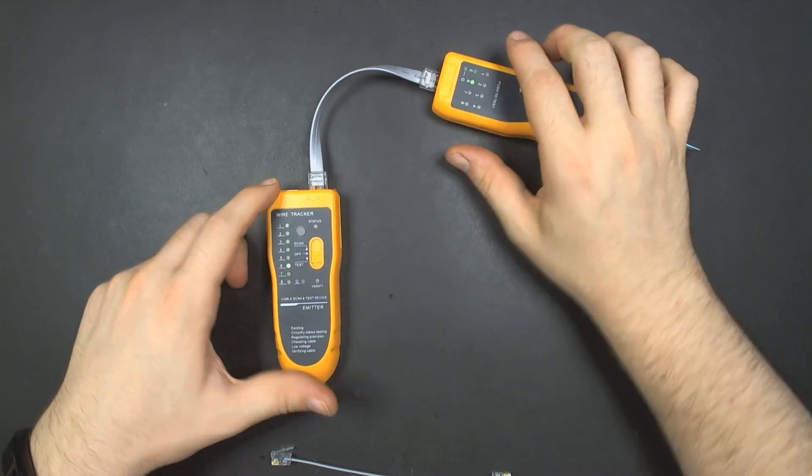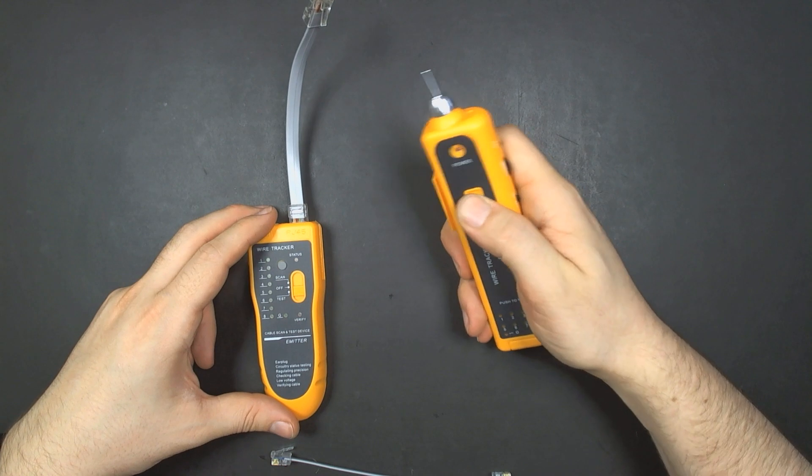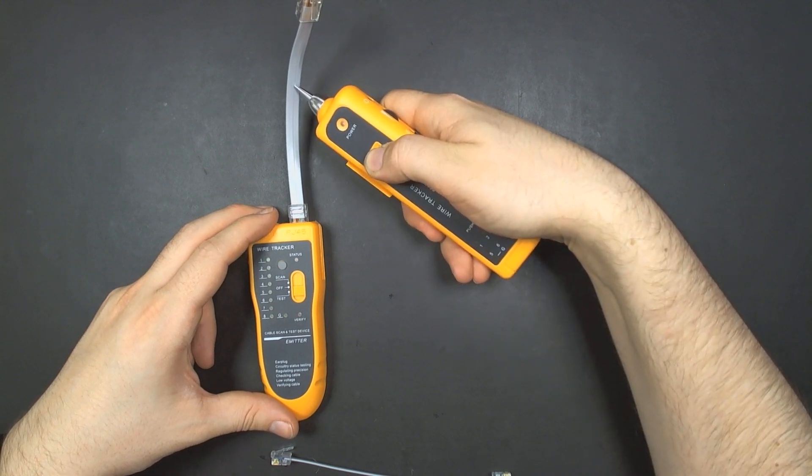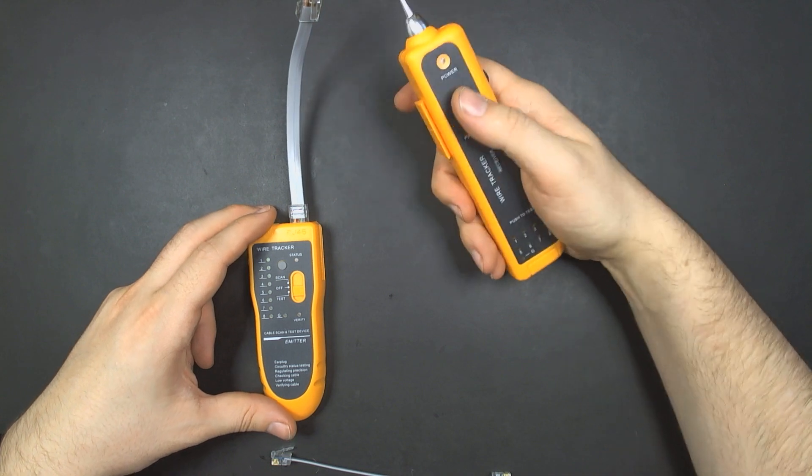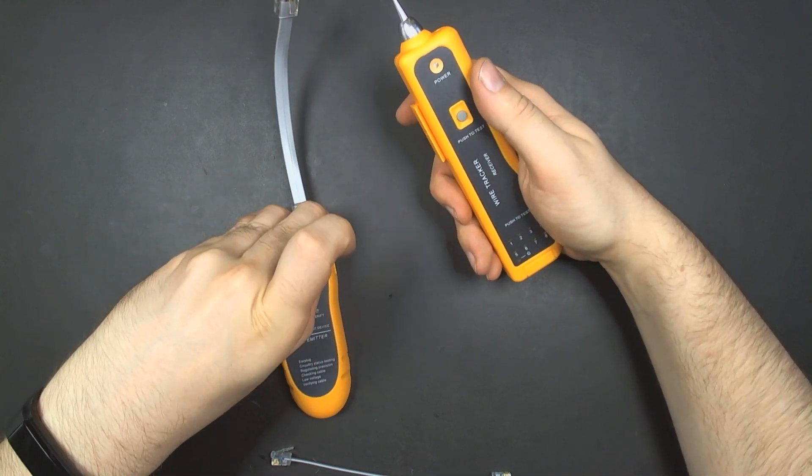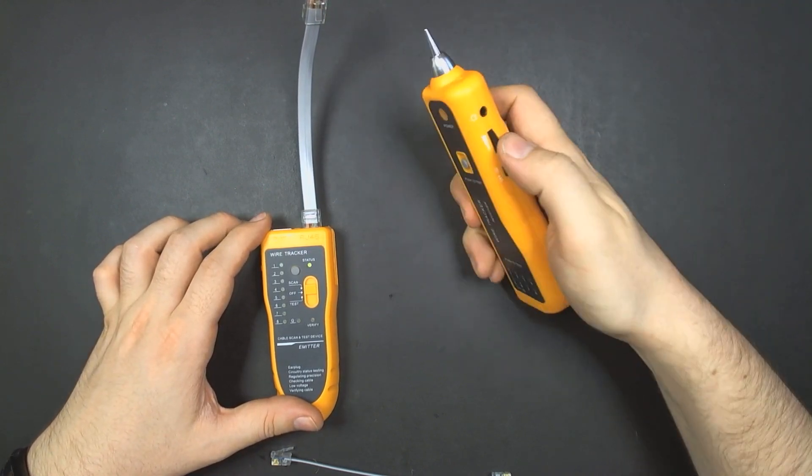This is just sending a signal down each pair. You can probe the wire here and hear the pops as it tries to send the signal. It'll do a tone gen if you put it on scan mode, and you can adjust the volume.